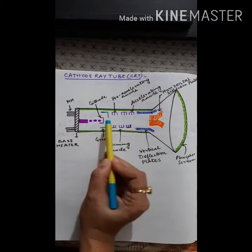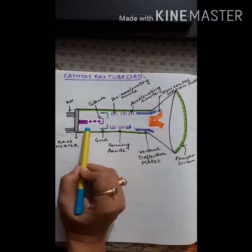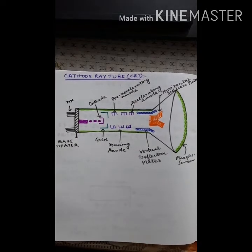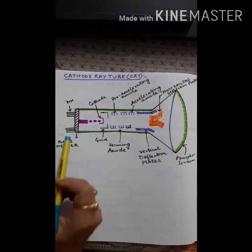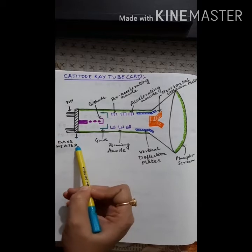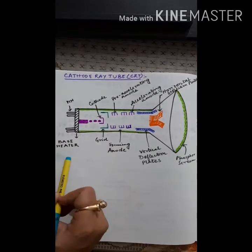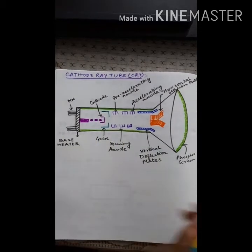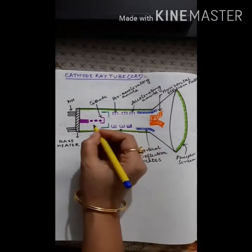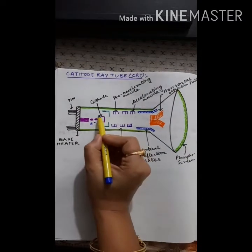This is the electron gun. Inside the electron gun, a cathode is placed. The work of the electron gun is to emit electrons once it gets heated up. Whenever electricity flows through the pin, the base heater heats up, the electron gun gets heated, and as a result it emits electrons. These are the electrons shown in the diagram. This is the cathode part.